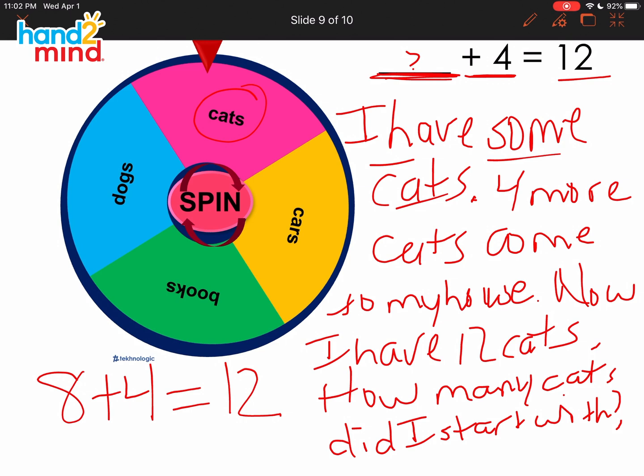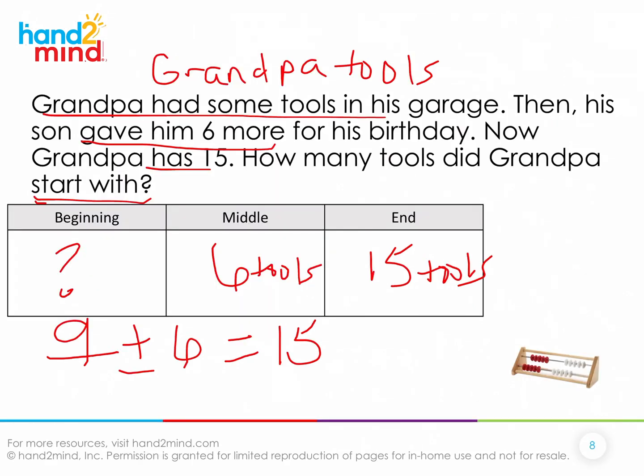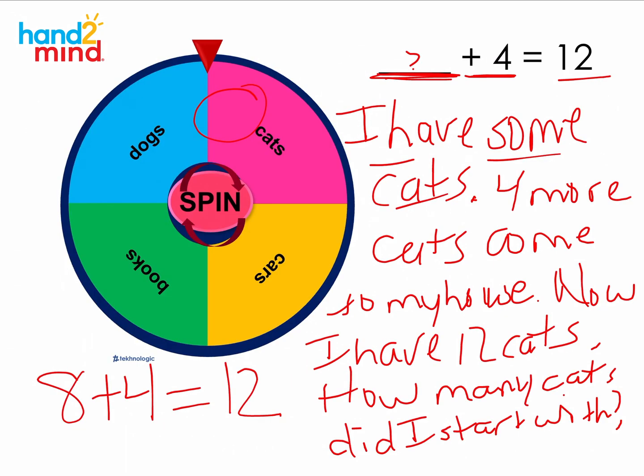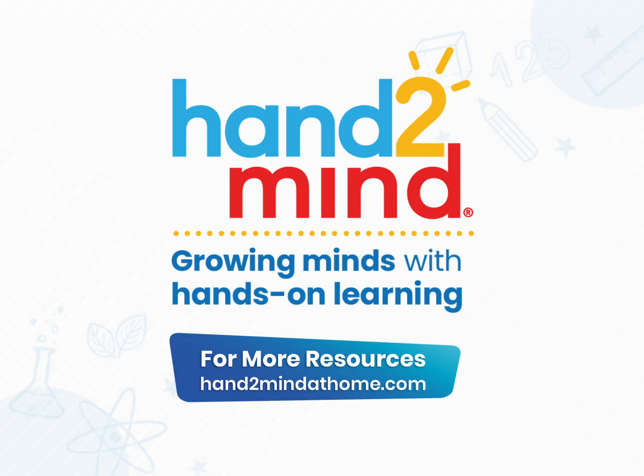So these stories that we've been talking about today have all been stories where the beginning has been missing. We've been missing the beginning. So we haven't known the start of the story. So if you'd like to practice more on these problems that you don't know the start and you have to figure that out, go to handtomind.com where you can get some more activities that reinforce this idea. Hope you all have a great rest.